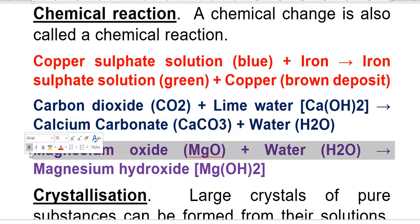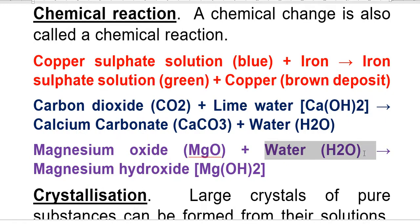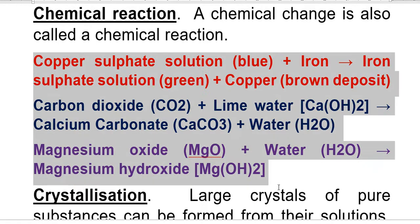Magnesium oxide, which is ash made by burning magnesium, when mixed with water forms magnesium hydroxide solution. This is also a chemical reaction. These are all chemical reactions when there are chemical changes.